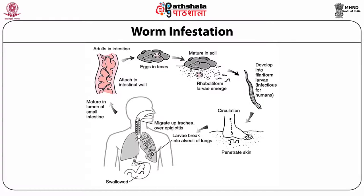The cycle of worm infestation begins with adult worms in the intestine; eggs are passed in feces, then mature in soil and develop into filariform larvae infectious for humans. The larvae enter circulation by penetrating the skin on contact with contaminated soil. The larvae then break into the alveoli of the lungs by migrating up the trachea over the epiglottis. They then mature in the lumen of the small intestine and migrate to the intestinal wall, becoming adult worms to complete the cycle.